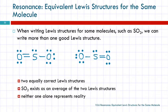Which one's better? Neither. They're the same. They're equally good. So Lewis' theory doesn't handle this very well. The best we can do is to say, well, the actual structure is actually something in between. And so we put a double-headed arrow between these two structures. They're called resonance structures, which suggests that it's going back and forth. That's not what it's doing. The actual structure is sort of a hybrid or an average of both of them. So neither of these alone is reality.